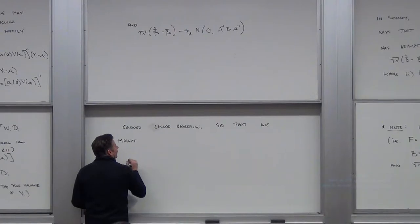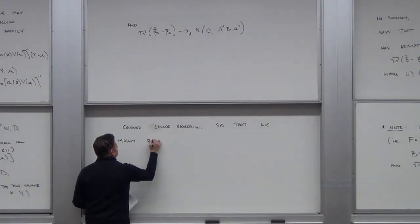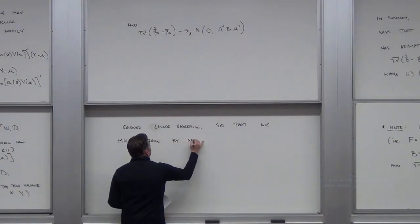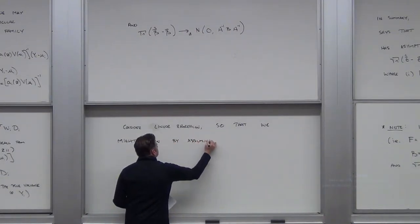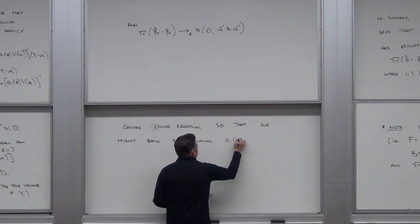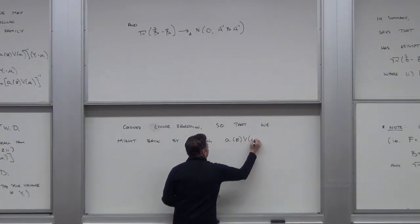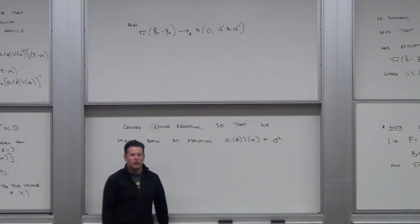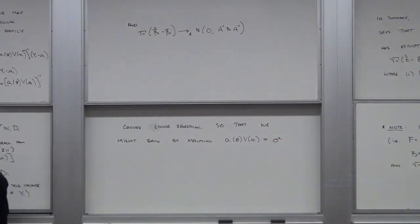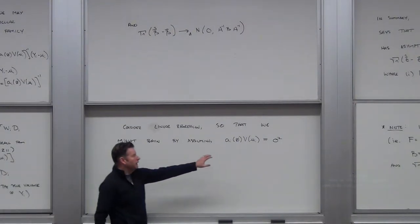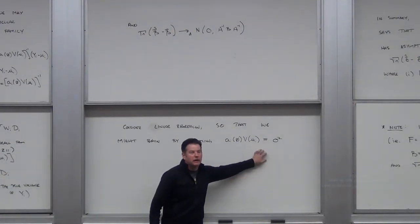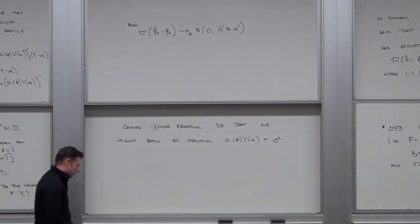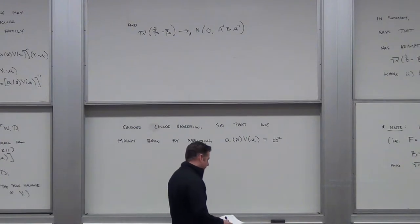So let's think about linear regression. We might begin by assuming that a_i phi v of mu_i is equal to some sigma squared — some constant. And so what that is saying, if you type in LM inside of R, it's assuming homoscedasticity, right? That you've got constant variance across each of those variables. Similarly, if you type in LM with family equal to normal, same thing.